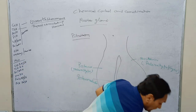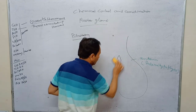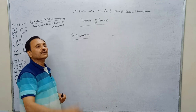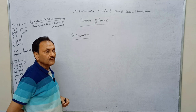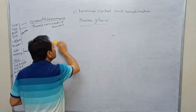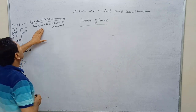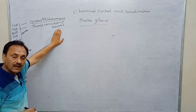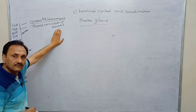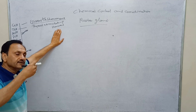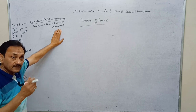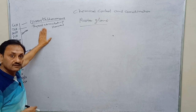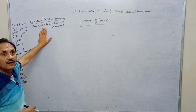The thyroid gland is present on both sides of the trachea. It has follicles responsible for producing T3 and T4. The amount of these secretions is directly controlled by the pituitary through the thyroid stimulating hormone. This means BMR is indirectly under the control of the pituitary via TSH. T3 and T4 control BMR, but their secretion is under the control of TSH.